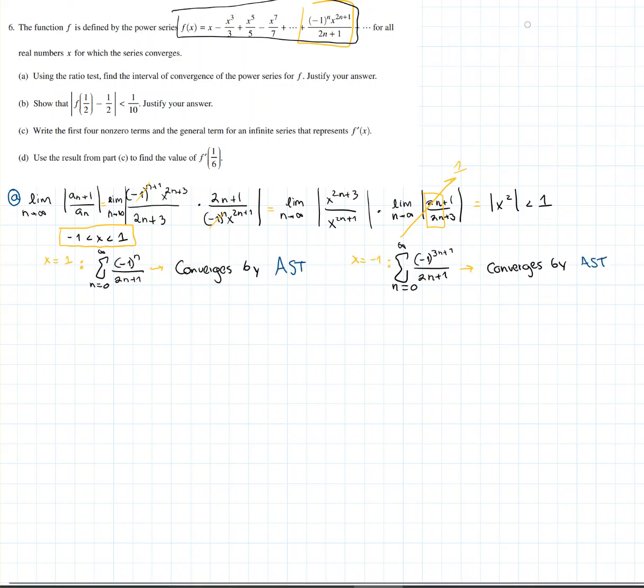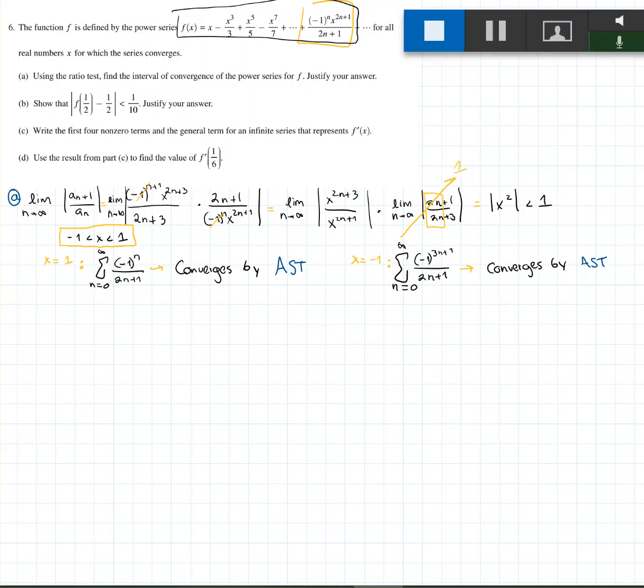So how do you plug these x values? Well, you just plug them into our general term. And when we plug x equals 1 to that term, we get that (-1)^n over 2n+1, and that converges by the alternating series test. And for x equals negative 1, we get (-1)^{3n+1} over 2n+1, which also converges by the alternating series test, which means that our interval converges at the end, [-1, 1] including both endpoints. And that's how you finish part a.